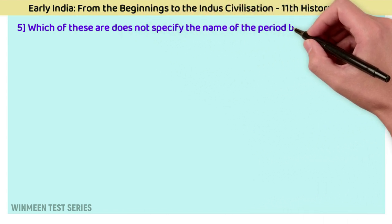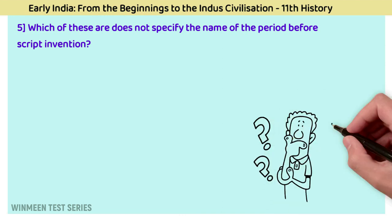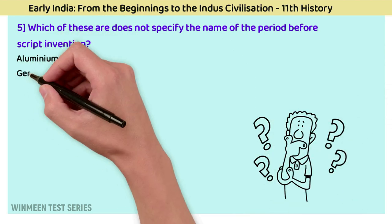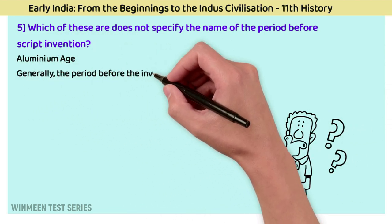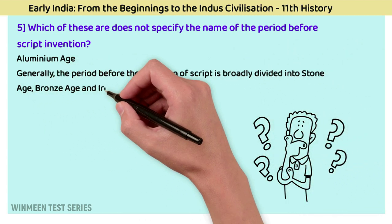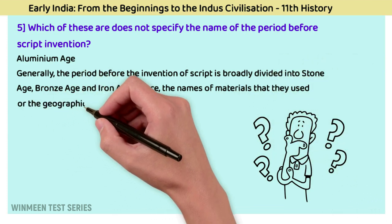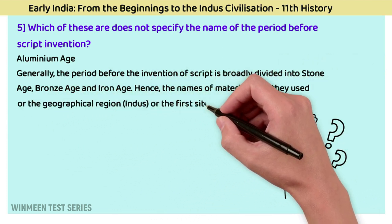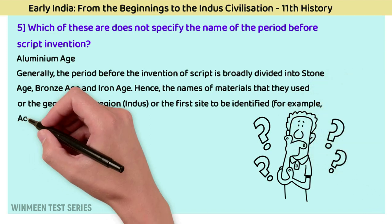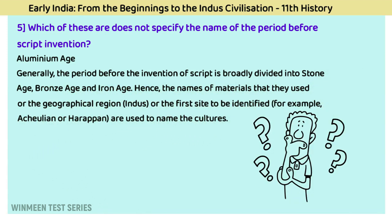Question 5: Which of these does not specify a name for the period before script invention? The answer is the Aluminium Age. Generally, the period before inventing the script is broadly divided into Stone Age, Bronze Age, and Iron Age. Names of materials used, geographical regions such as the Indus, or the first site identified — for example Acheulean or Harappa — are used to name the cultures.